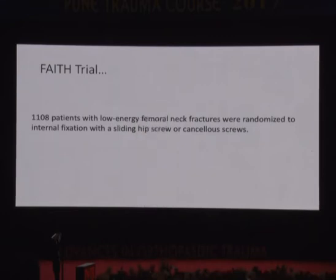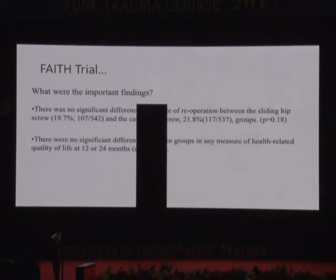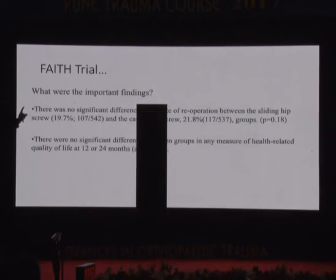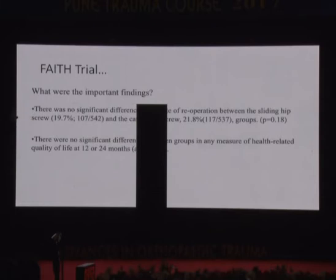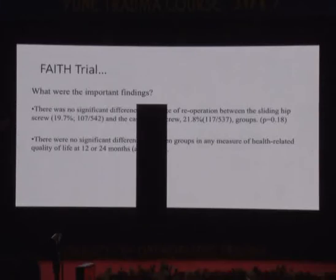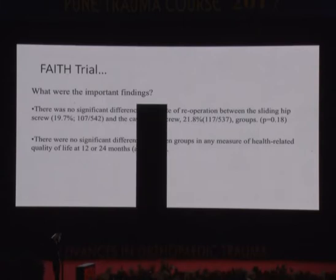There was no difference in outcome rates at two years between DHS and cannulated screws — though this was for elderly fractures. There was roughly a 20% re-operation rate for both groups. Based on best available evidence for elderly patients, it's dealer's choice. Interestingly, there was an increased AVN rate in the DHS group that resulted in more operations, though the overall re-operation rate between the groups was the same.